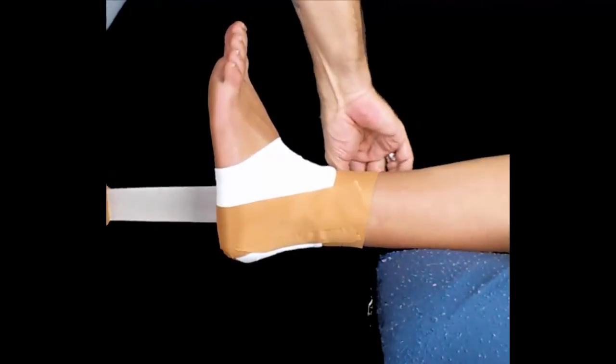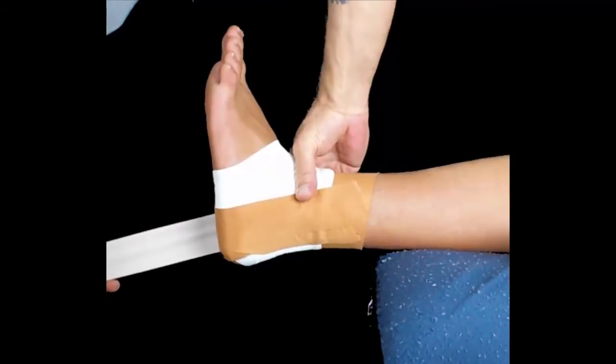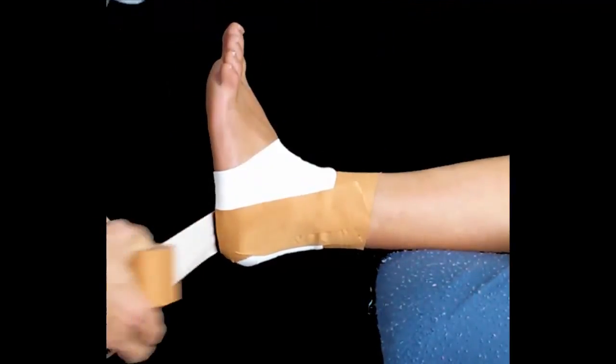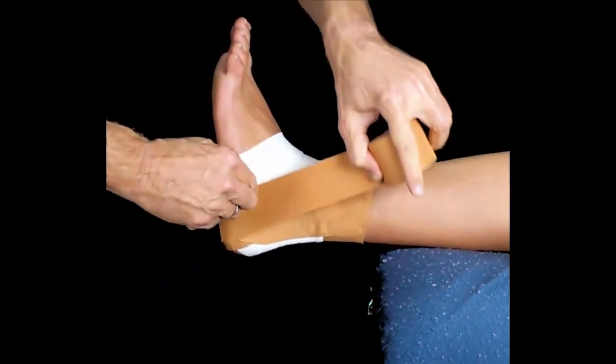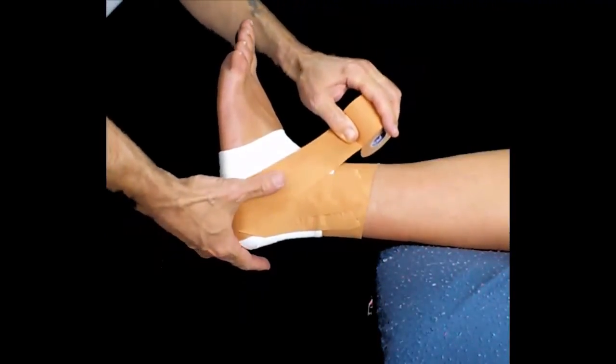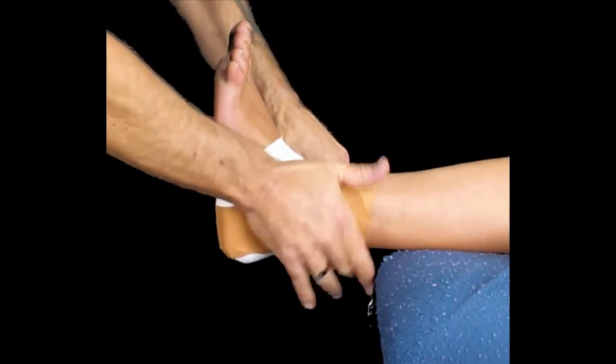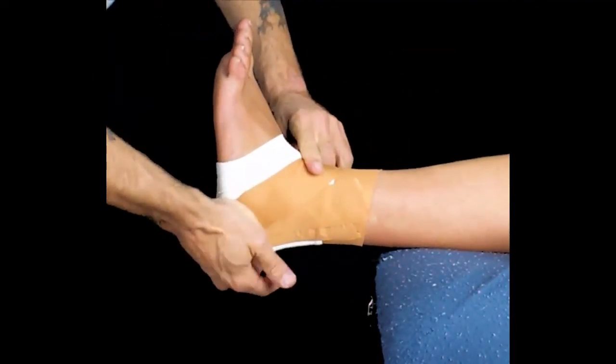The next part of the taping is four figure sixes. Starting on the inside, we're coming around the front, allowing the tape to fall around the shape of the ankle, making sure there are no wrinkles.